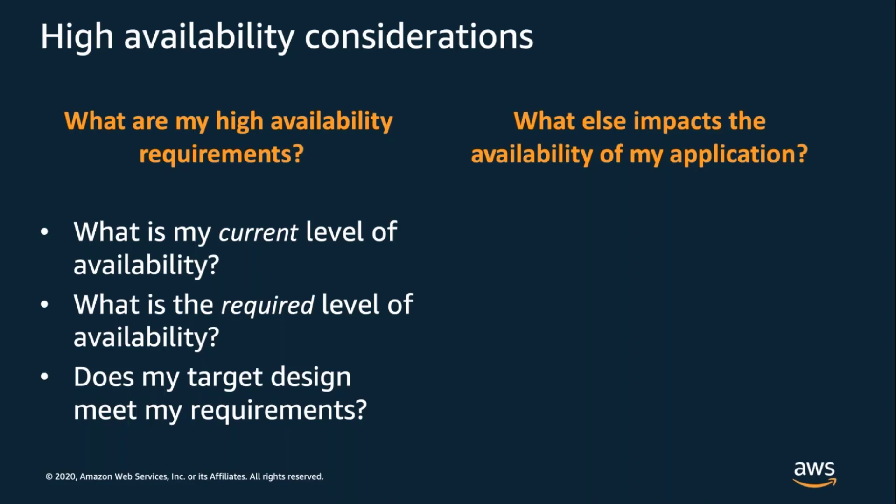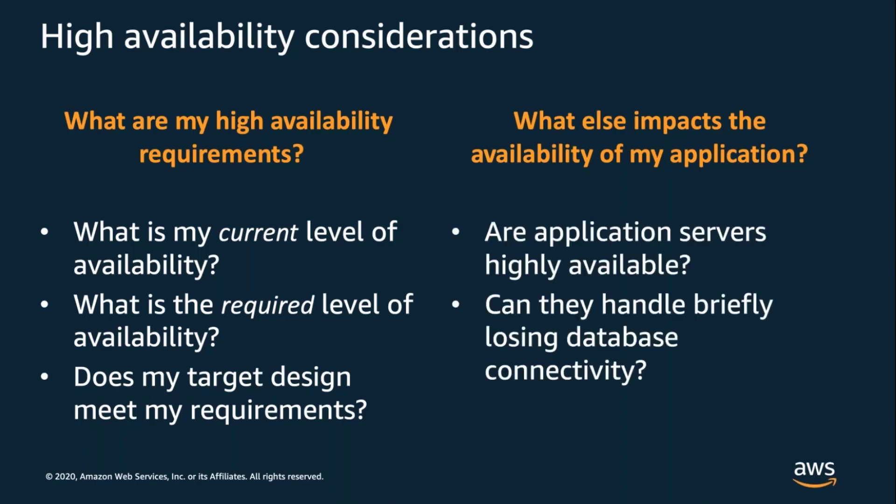Not all applications require high availability, and there are practical limits to the availability of any one database, but starting from business requirements will help you make the right decision for your particular use case. It's also important to understand the other things that impact availability — for example, are your application servers spread across all availability zones in a region, or do you have hard dependencies on a single AZ or region? And for the portion of your app that talks to the database, how does it handle disconnects when the database fails over? It's important to actively test your applications to understand how they are impacted by different failures.